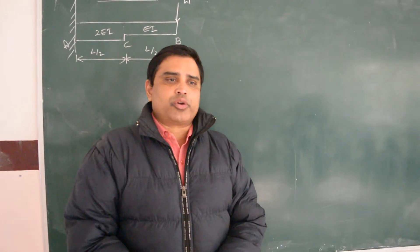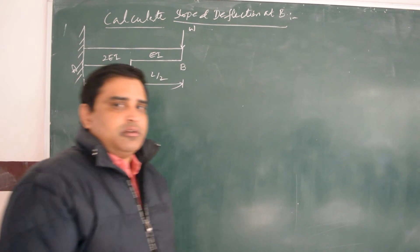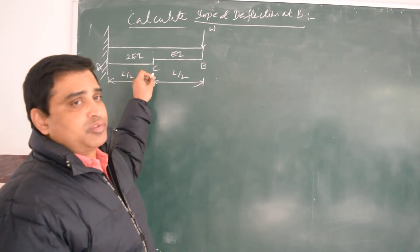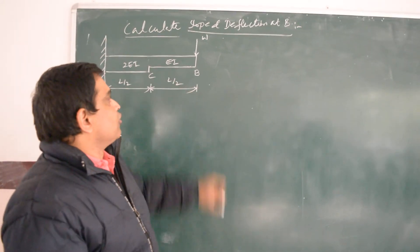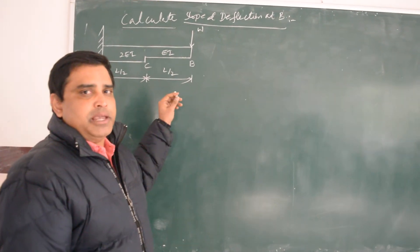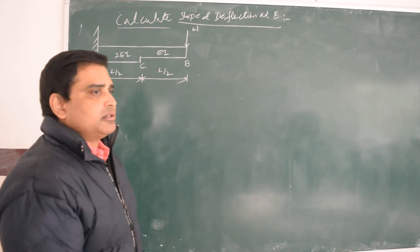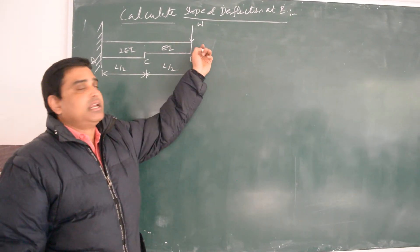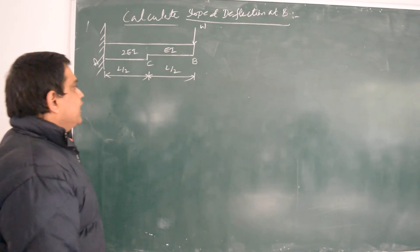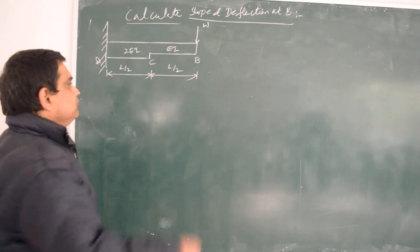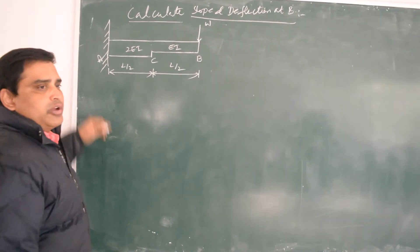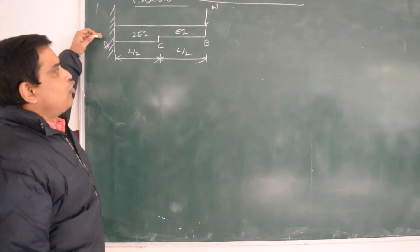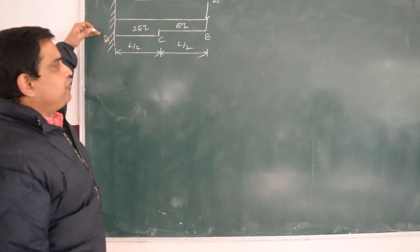Good morning guys, today we are going to solve one numerical for a cantilever beam with varying flexural rigidity from A to C and C to B, by using the conjugate beam method. The beam carries a point load W at the free end and has a total length A to B of L. We have to find the slope and deflection at the free support.